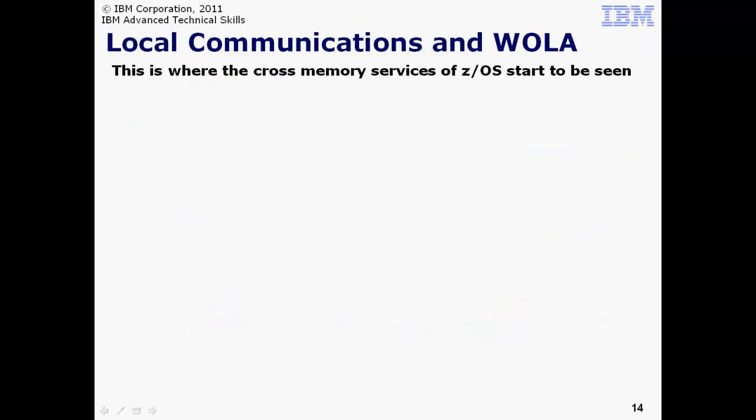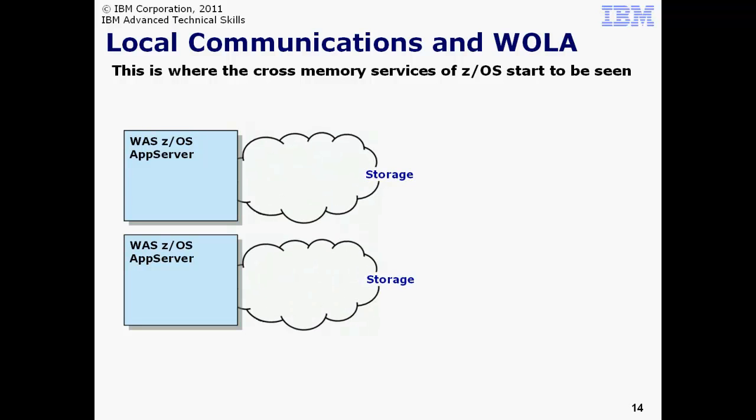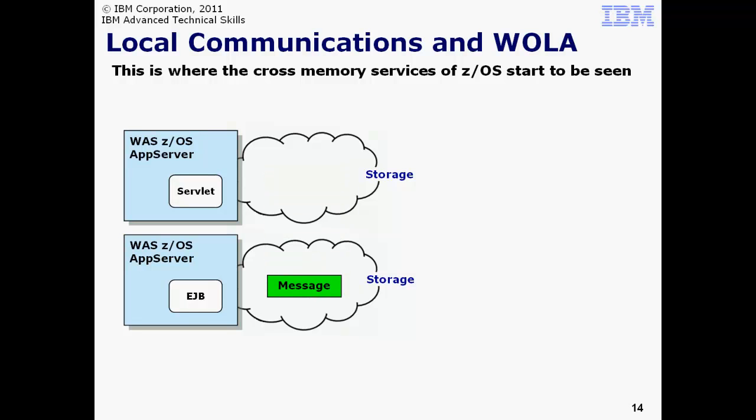The WebSphere Optimized Local Adapter, or WOLA for short, is function built on a capability that's been in WAS z/OS since the very early days. That function, called local communications, is in turn built on the cross-memory services we mentioned earlier. To explain this, we find it best to go back and explain local communications, then explain how WOLA is really an externalization of that. We start this story with two application servers on the same LPAR. Each server has its own set of virtual storage. Now imagine a servlet in one application server forming up a message to send to an EJB in another server. Rather than invoke the communications stack, the local communications function of WAS z/OS directly copies the message from the origin server to memory in the target server. That's why local communications is so fast.